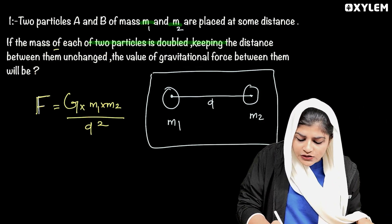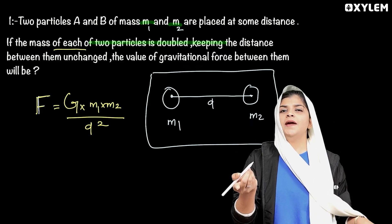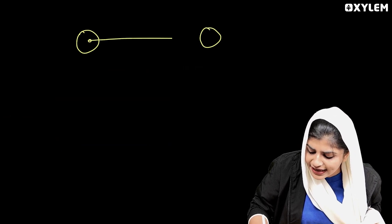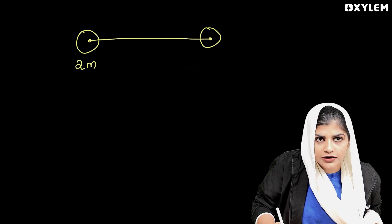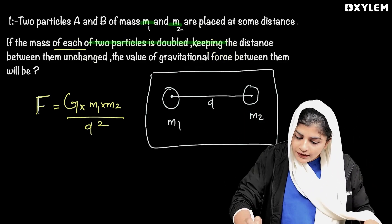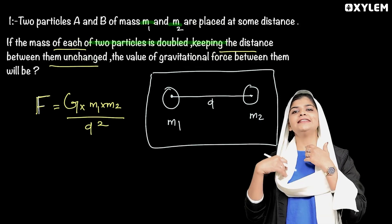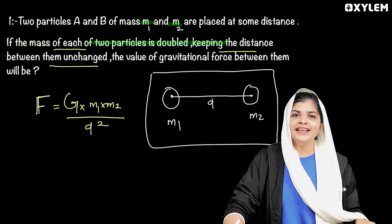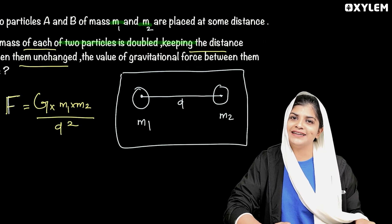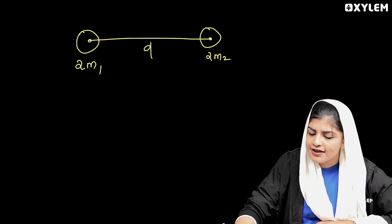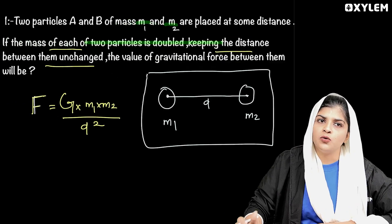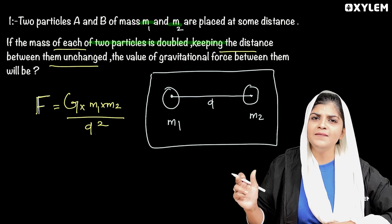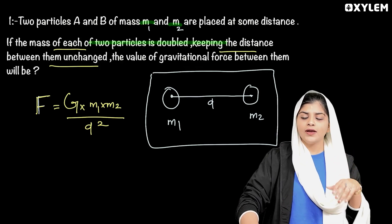We know that the mass of each of the two particles is doubled — 2M1 and 2M2. Keeping the distance between them unchanged, D remains the same. Find the gravitational force between them. F is equal to G into M1 into M2 divided by D squared. That is our equation.